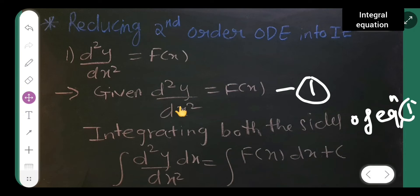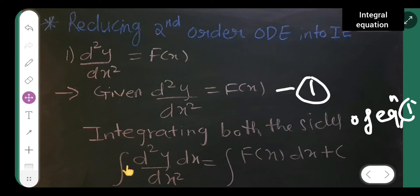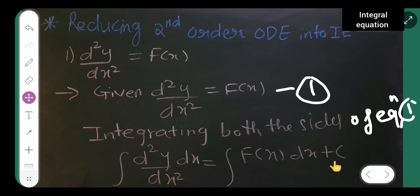What is this second order derivative which is equal to f of x? Applying integral on both sides: integral of d square y by dx square dx is equal to integral of f of x dx plus c. Whenever you integrate, you add up the constant of integration.